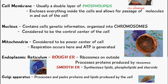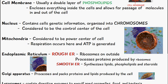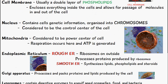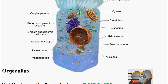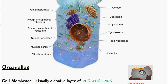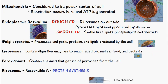The function of the smooth endoplasmic reticulum is to synthesize lipids, phospholipids, and steroids. Following on from this, we have a Golgi apparatus and the function of this is to process and pack proteins and lipids produced by the cell. Here we have the Golgi apparatus, and its function is to pack the lipids and proteins produced by the cell.